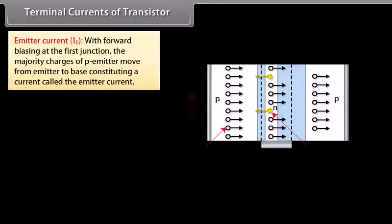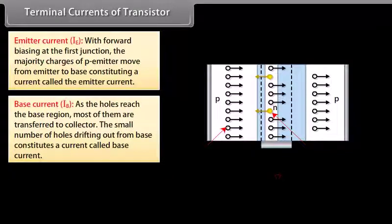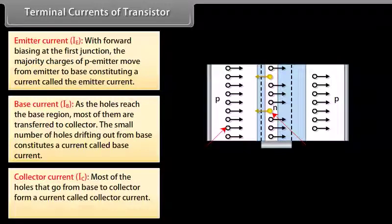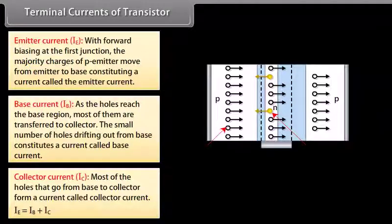Terminal currents of a transistor — considering a PNP transistor: With forward biasing at the first junction, majority charges of the P emitter move from emitter to base, constituting the emitter current (I_E). Most holes reaching the base are transferred to the collector; the small number drifting out of the base constitutes the base current (I_B). Most holes going from base to collector form the collector current (I_C). The relationship is I_E = I_B + I_C. Current directions are opposite in PNP and NPN transistors.